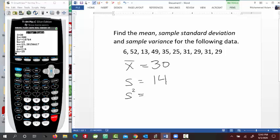So this is S squared. So that's 14 squared. So that would be 196, because it's just the square of the standard deviation.